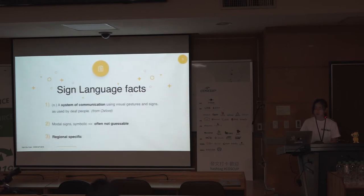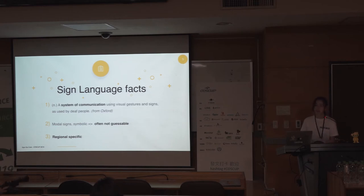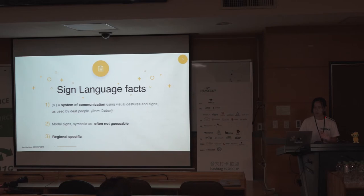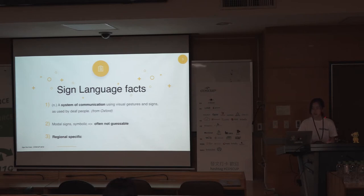Sign language is a system of communication using physical gestures like hand signs, and also includes facial expressions. It is usually used by deaf people. Unlike general hand gestures, sign language is a formal system — each sign is symbolic. It is also region-specific; the one used in Hong Kong is called HKSL, which is different from American Sign Language (ASL).